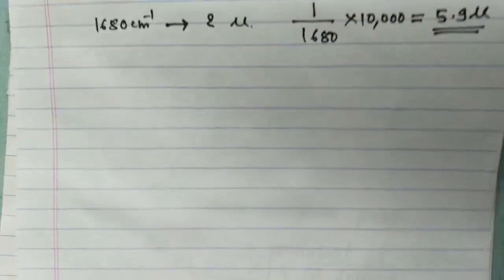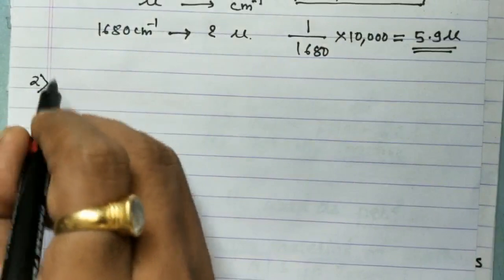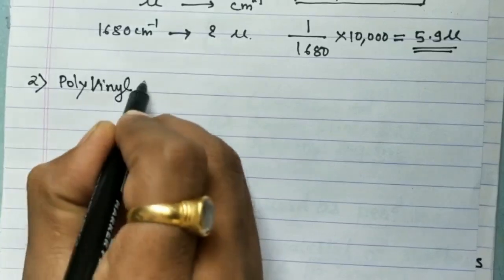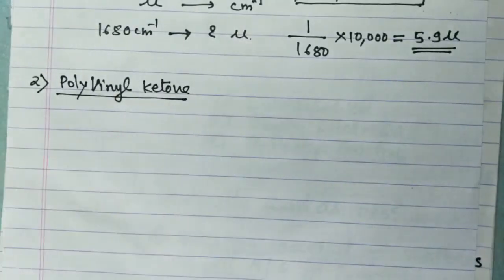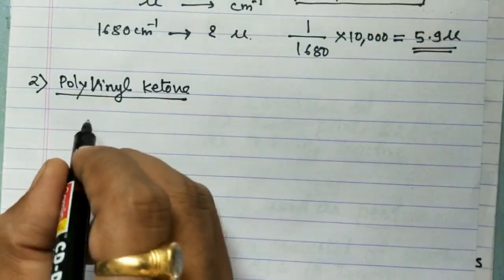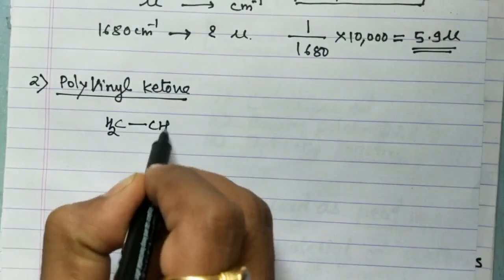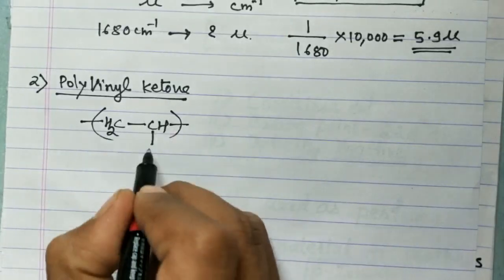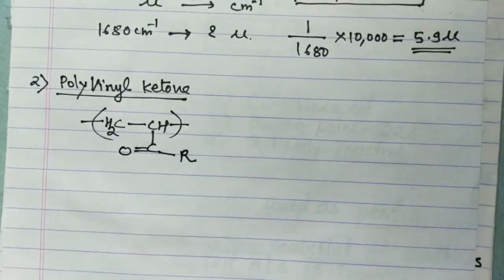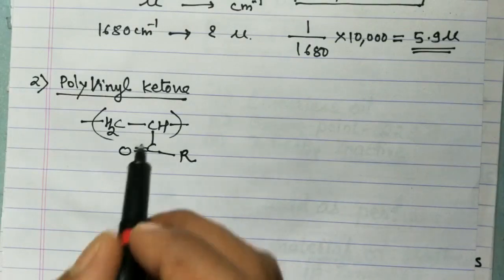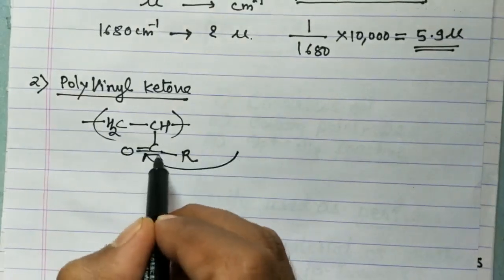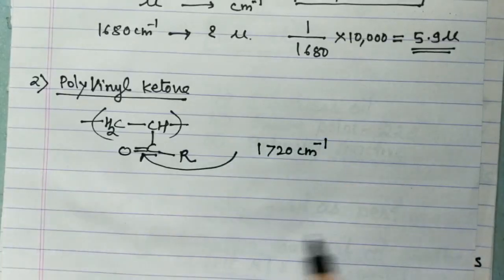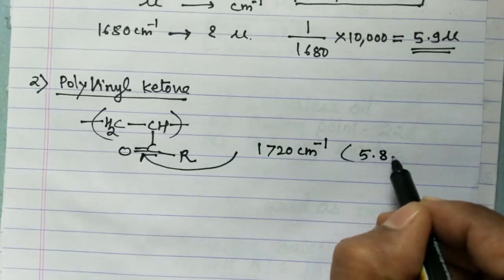The next example is polyvinyl ketone. Its structure is –(CH₂–CH(C=O))n–. The characteristic IR frequency is due to the carbonyl group of the ketone, which appears at 1720 cm⁻¹, corresponding to 5.8 microns.